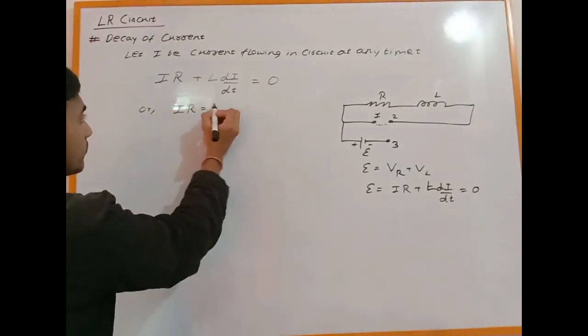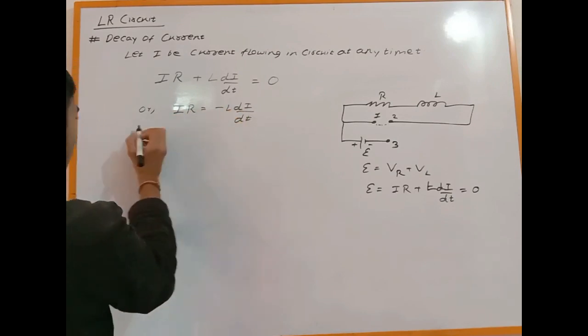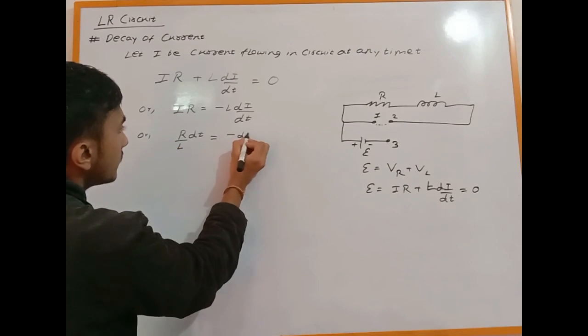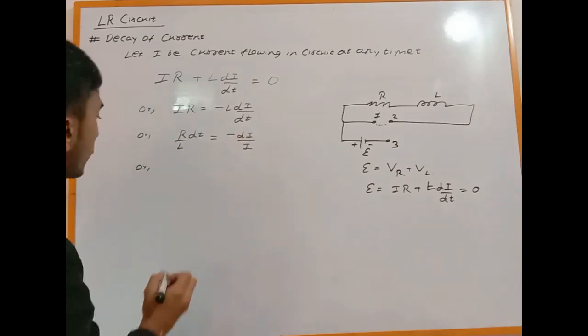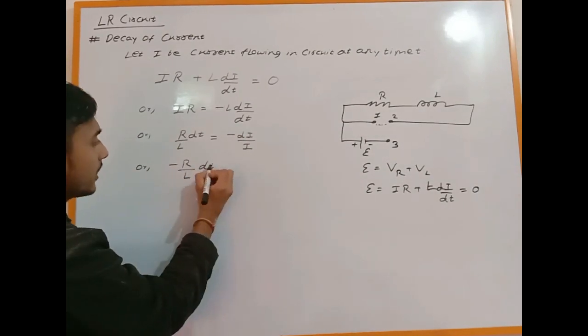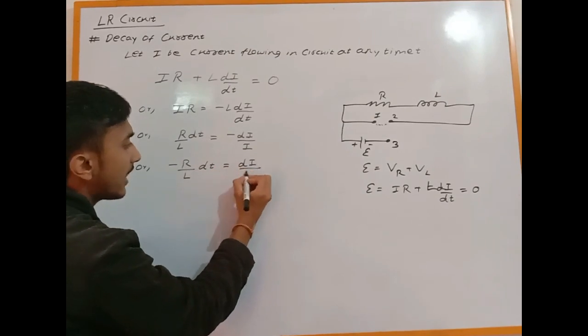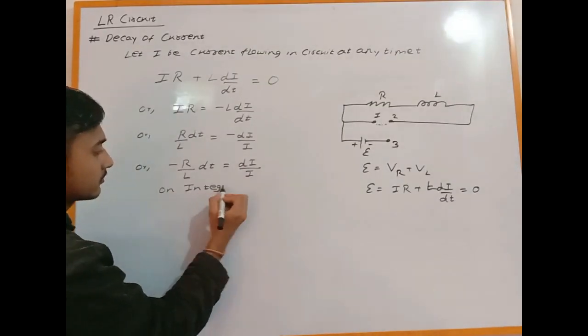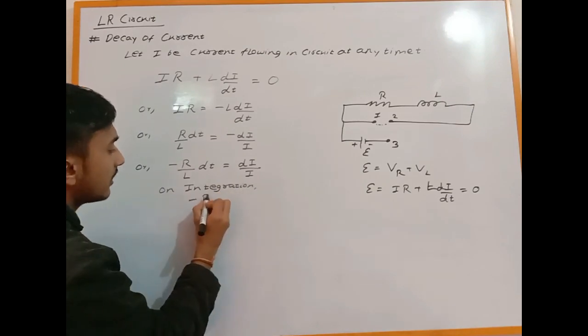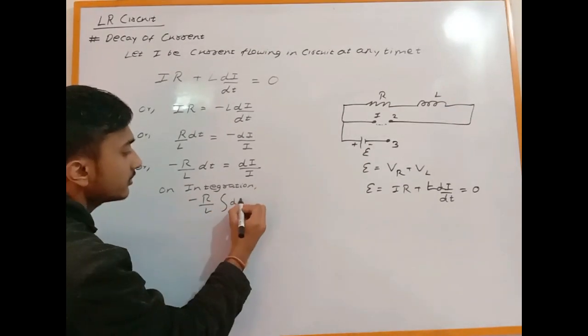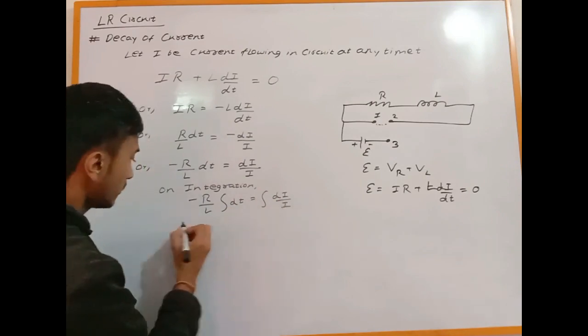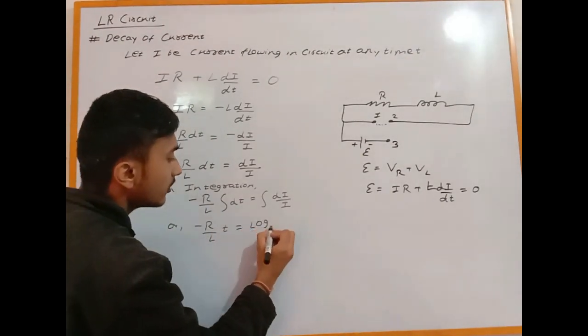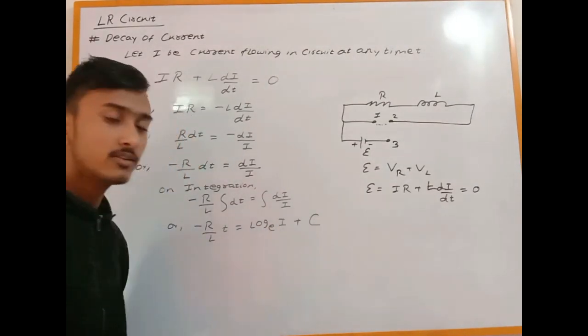So I·R plus L(di/dt) equals zero. Rearranging: -di/I equals (R/L)dt. I'll introduce the minus sign here. So -(R/L)dt equals di/I. Now I can integrate both sides. On integration, -(R/L)∫dt equals ∫(di/I). Integrating: -(R/L)t equals ln(I) plus C, where C is the constant of integration.